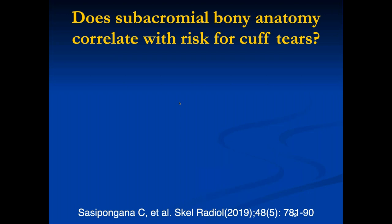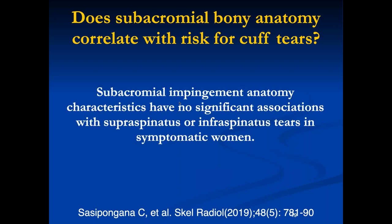A key question is whether subacromial bony anatomy correlates with risk for rotator cuff tears. Neer believed it was the principal cause. However, this and other studies show no good correlation between rotator cuff tears and subacromial impingement anatomy. I still begin my first paragraph with this, partly for historical reasons, but I do think subacromial impingement is a real factor producing symptoms—even if it's no longer considered the primary cause of rotator cuff tears.